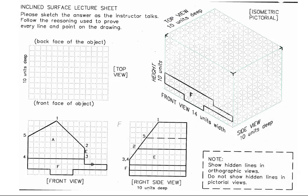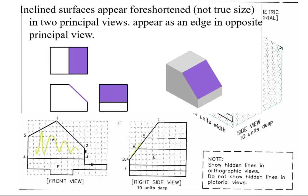Let's focus on the given front and the right side view to see what kind of surfaces are given. Remember, for an inclined surface, it always appears as foreshortened in the two principal views and as a surface edge in the third view. So by counting the number of inclined edges, we can know the number of inclined surfaces in the model. In our case, we have A, B, and C as inclined surfaces in the model.